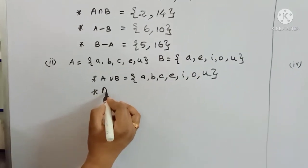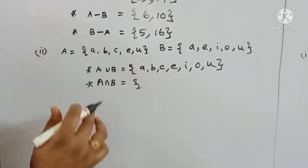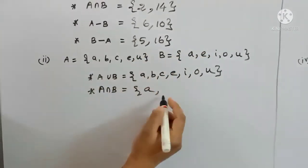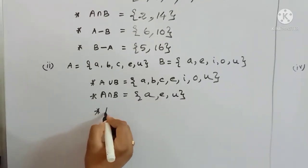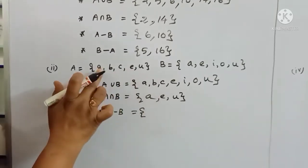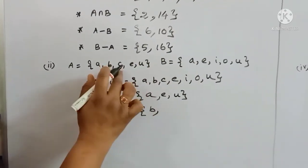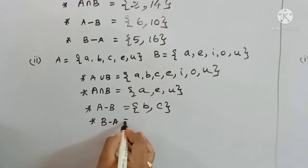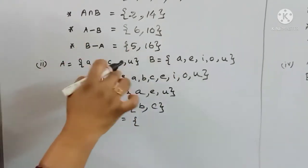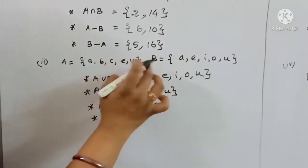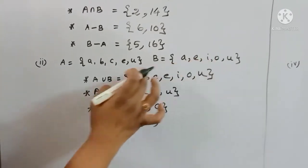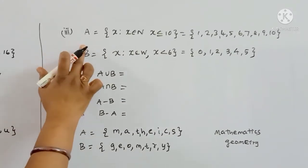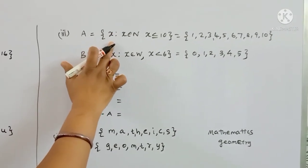A intersection B — we find the common elements. A = {A, B, C, D, E}, B = {i, O, U}. Common elements are those present in both sets.